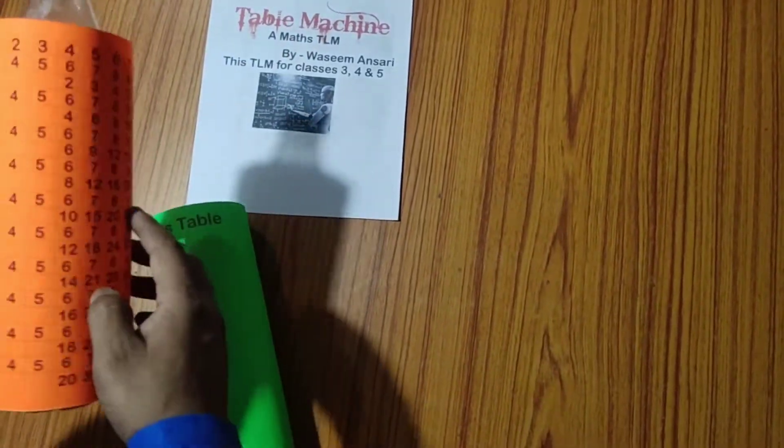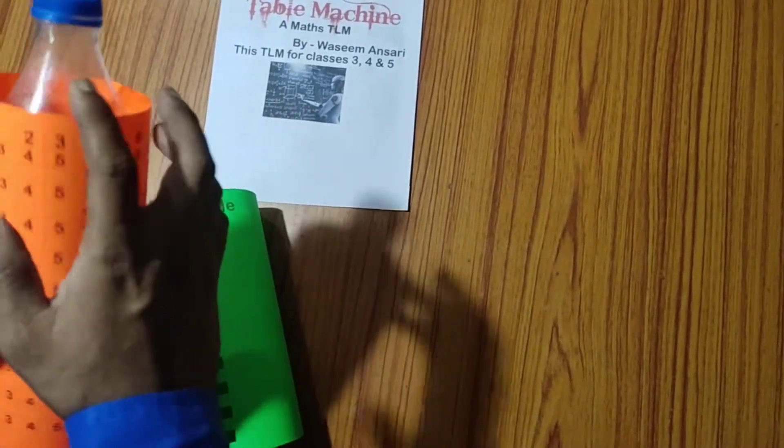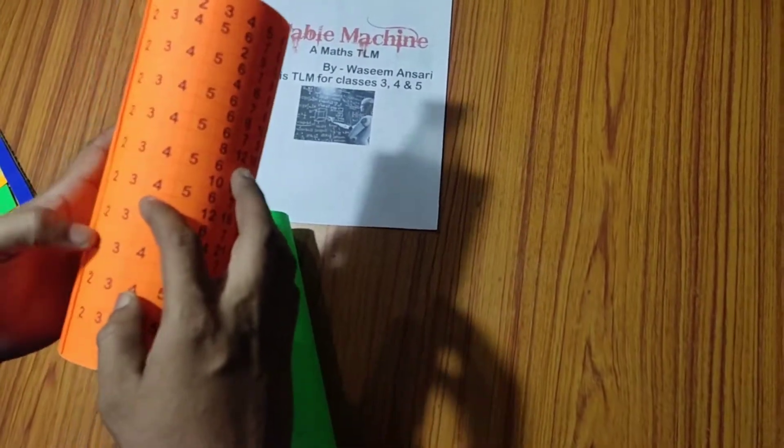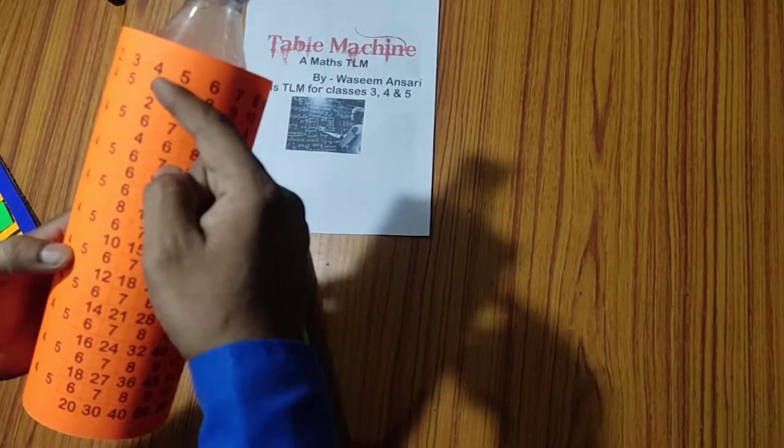Basically it is a maths TLM and we have prepared it with the help of this bottle. On one sheet we have written some numbers. We have written here the tables for which we are preparing the numbers and here we have written the table.